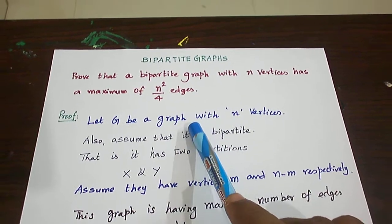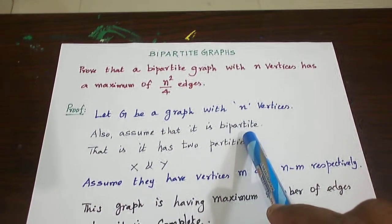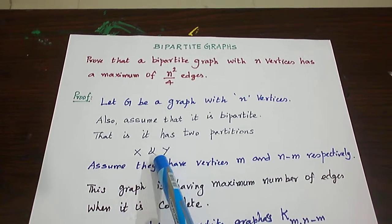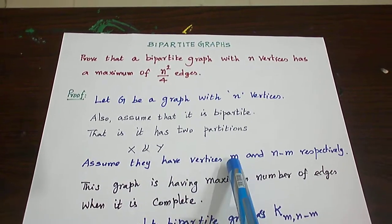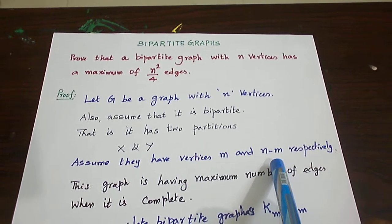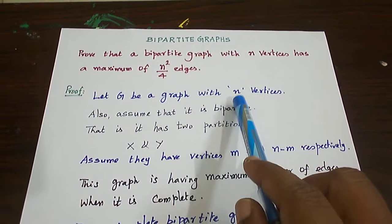Let me take a graph with n vertices and assume that it is bipartite. There will be a partition X and Y. I assume the first partition has m vertices and the second partition has n minus m vertices, so that the total number of vertices is n.